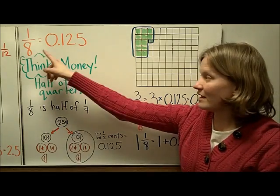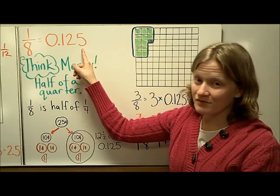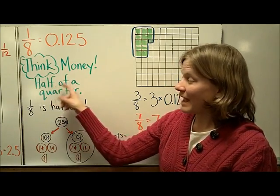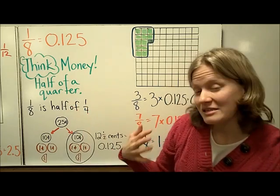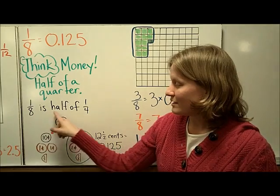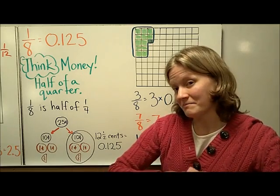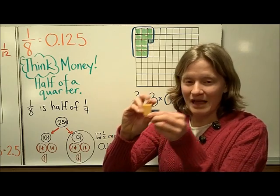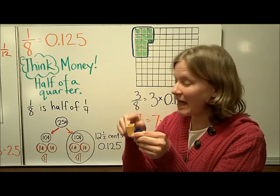The next one is 8ths. 1 eighth is equal to 0 and 125 thousandths. Again, the best way I think to think about this is money. Think about half of a quarter. Now I know that's not a real amount, but it's the easiest way for me to think about. First of all, you have to know that 1 eighth is half of 1 fourth. Here is 1 fourth and 1 eighth is half of that. So 1 eighth would be half of a quarter.